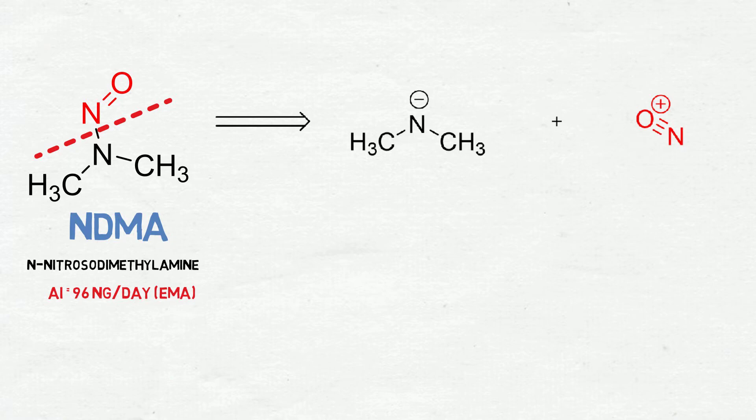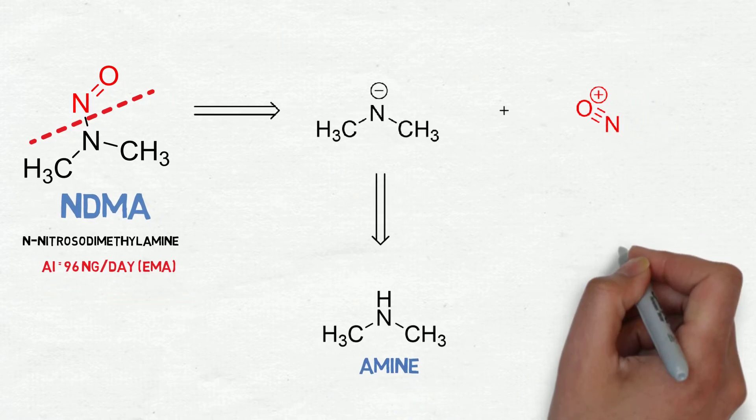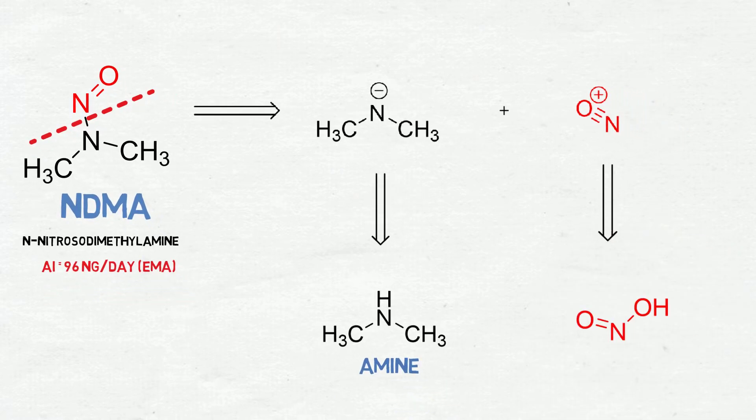Now we have the fragments that could generate NDMA, but where could these fragments come from? That's what we have to think. So the anion of a secondary amine could come from a secondary amine, and the nitrosonium could come from a nitrosating agent, for instance, sodium nitrite.